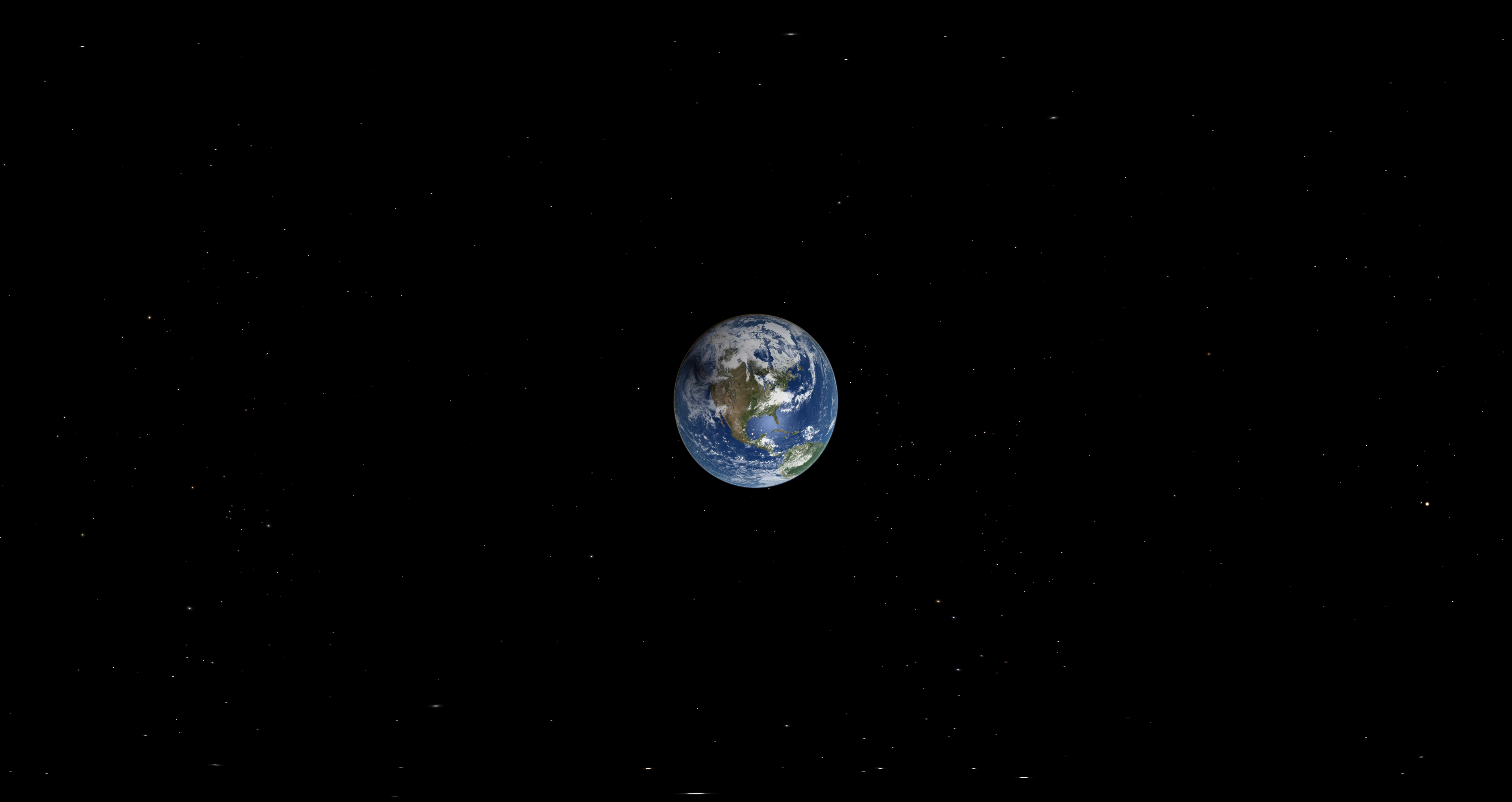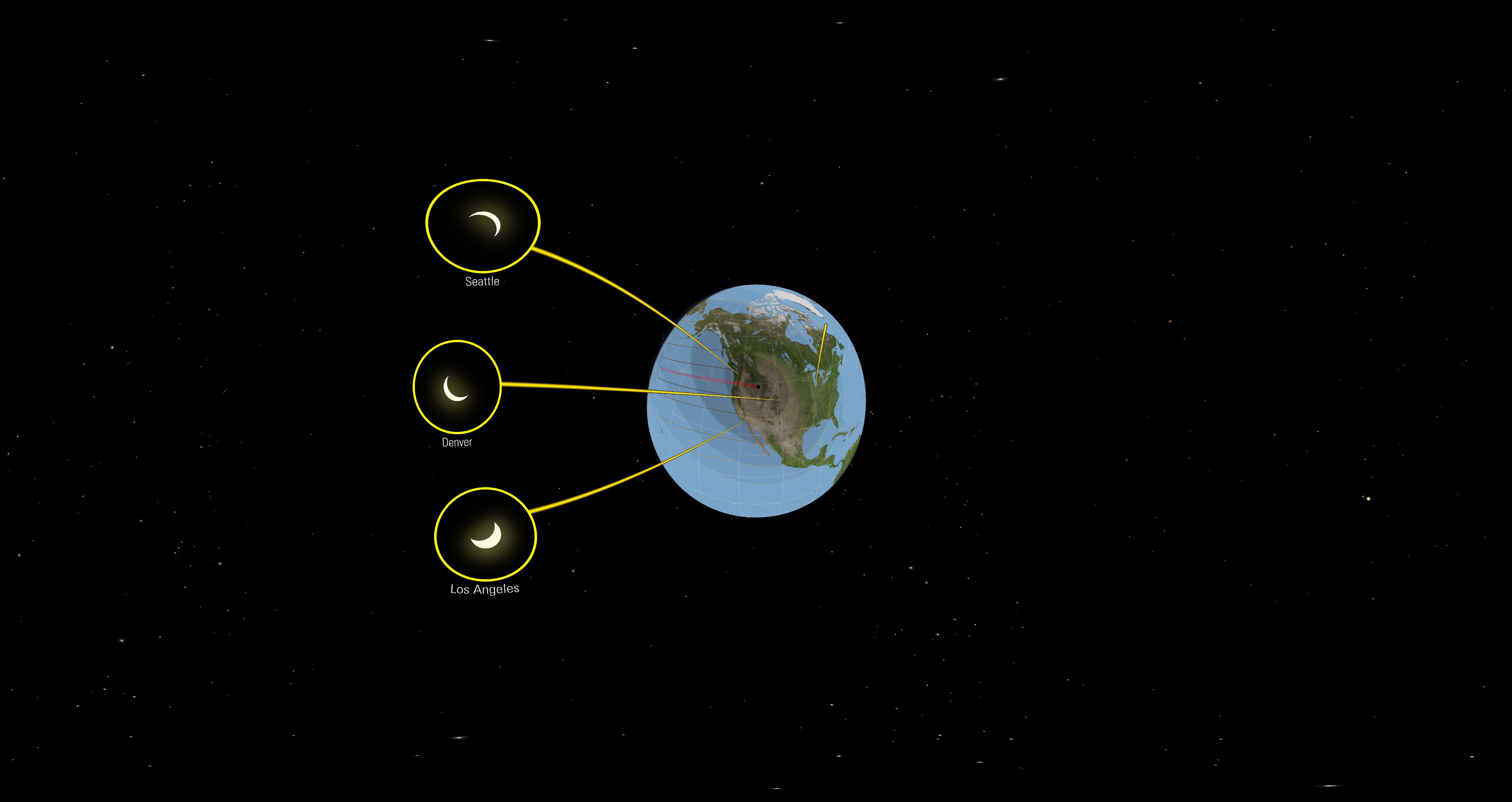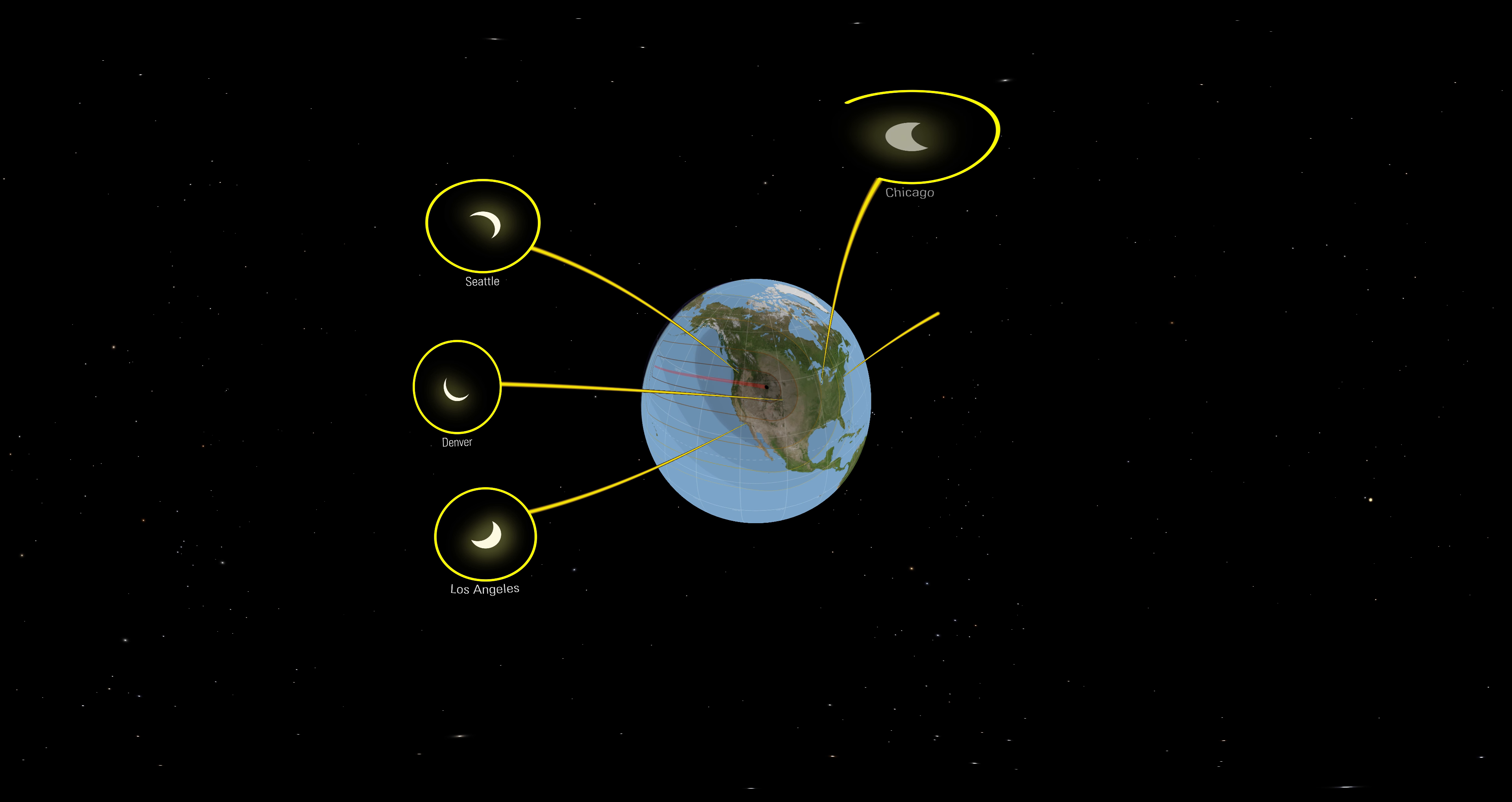This is a rare event. The last time that shadow of totality touched the continental U.S. was back in the 1970s. The path is narrow and the shadow moves quickly, so you'll need to find a spot along this path to see the greatest sight nature has in store: a total eclipse of the sun.